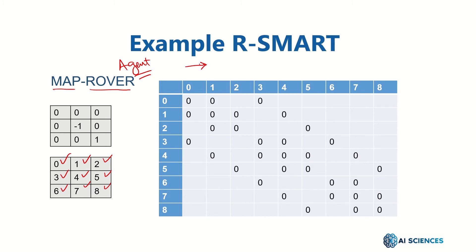The agent can move one cell to the right, one cell to the left, one cell above, and one cell down whenever possible. For example, if the agent is in state 0, it can only move right — which leads it to state 1 — or it can move down — which leads it to state 3 — or it can stay in the same state, looping back to state 0. So the allowed actions at state 0 are: move right, move down, or stay.